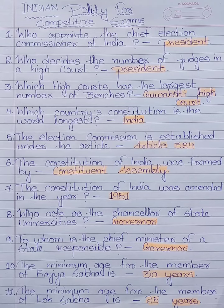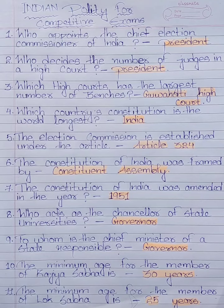The Constitution of India was first amended in the year 1951. Who acts as the Chancellor of state universities? Governor. To whom is the Chief Minister of a state responsible? Governor. The minimum age for members of the Rajya Sabha is 30 years.